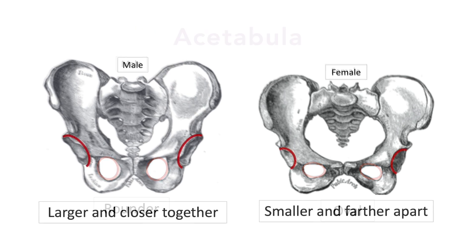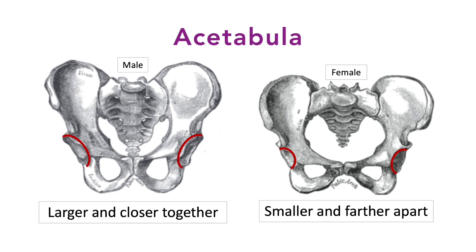Another difference between the male and female pelvis are the acetabula. The acetabula are the deep pockets that receive the head of the femur. In males, the acetabula are larger and closer together. In females, the acetabula are smaller and farther apart.